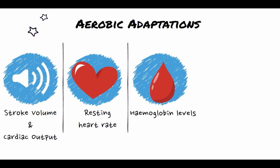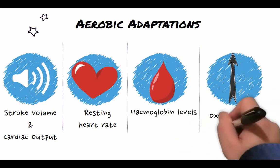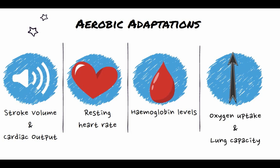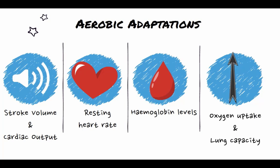Increased haemoglobin and myoglobin levels cause an increase in oxygen uptake in the trained athlete. Oxygen uptake is the body's ability to absorb oxygen into the blood, transport the oxygen, and then transfer it into the muscle. Oxygen uptake increases in response to training and allows for faster and more efficient delivery of oxygen to the muscles. When it comes to lung capacity, there is actually little or no change between an untrained and a trained athlete.